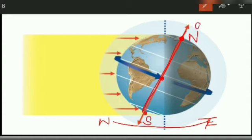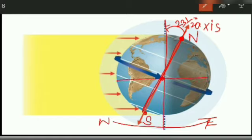This axis makes an angle of 23.5 degrees with the vertical line. And if you draw a horizontal line, it makes an angle of 66.5 degrees.